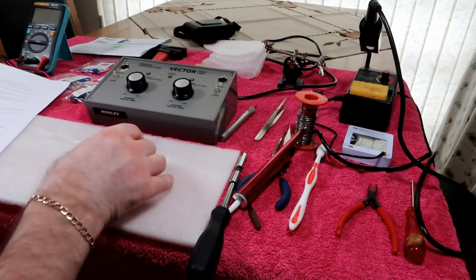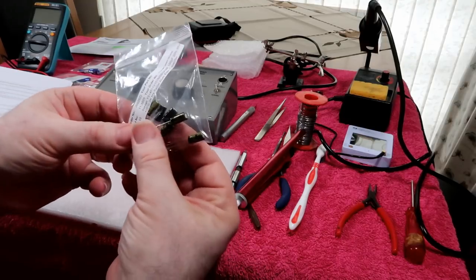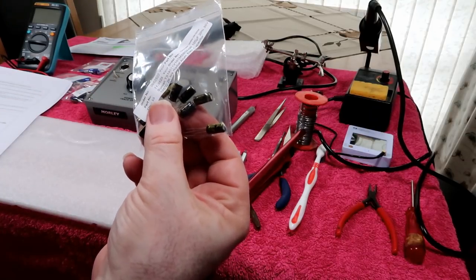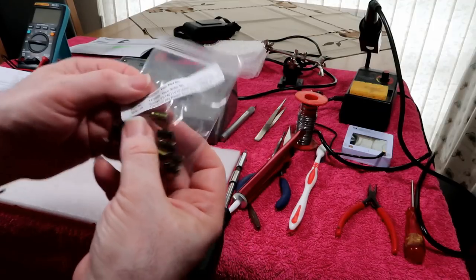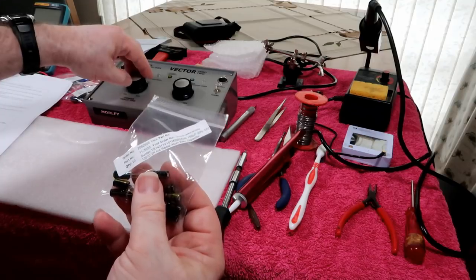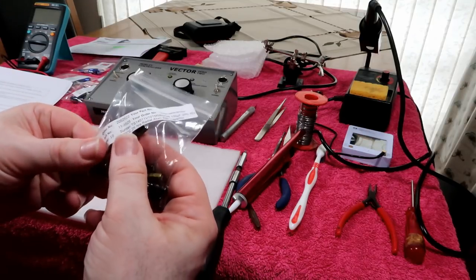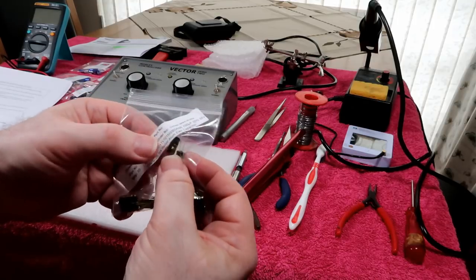And four 100 microfarad - and this is the key value - 100 microfarad 35 volt matched capacitors. Now when I say matched, it's because they have a 20 percent tolerance, and in order for the channels to be balanced we need to make sure the value of each capacitor is as close as possible, or each pair of capacitors anyway.